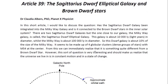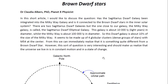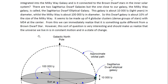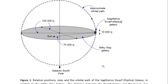It's made up of four globular clusters — dense groups of stars — and M54 is at the center. So from this we can realize it's quite different from Brown Dwarf Stars, but it's still an interesting question. Through it we can realize that our universe is in constant motion and in a state of change. Here's a diagram that shows you the Milky Way Galaxy and the Sagittarius Dwarf Elliptical Galaxy so we can compare the sizes and see the position.